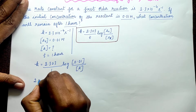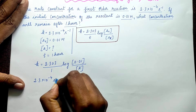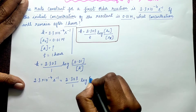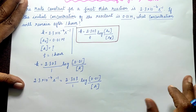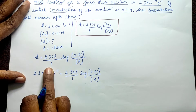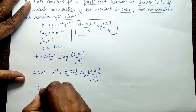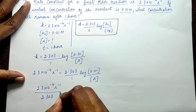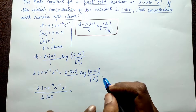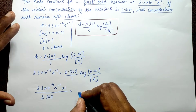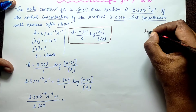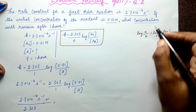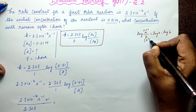So now, 2.3 × 10⁻⁴ = 2.303 / 1 × log(0.01 / [A]). We use the log property: log(a/b) = log a − log b. Here a = 0.01 and b = [A] (the final concentration).